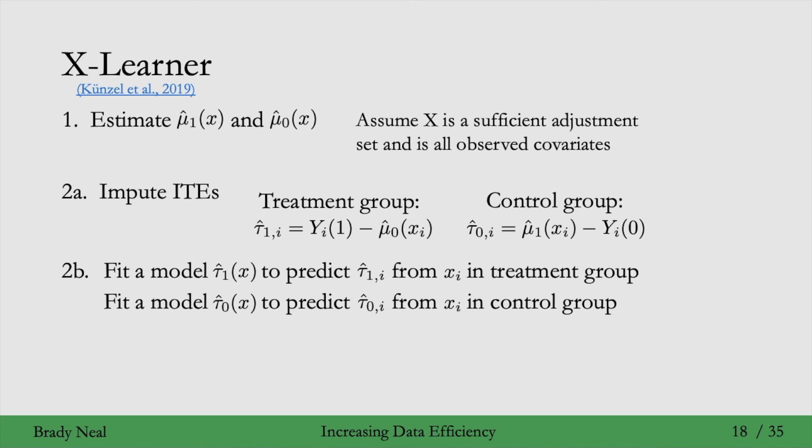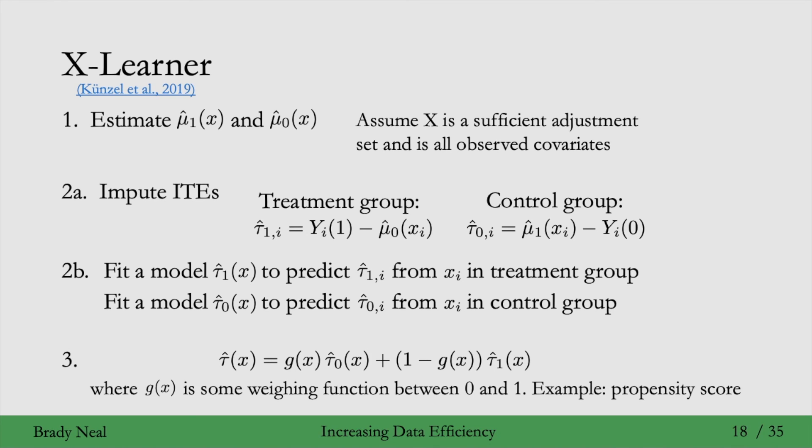In step 3, we combine these using a weighting function, G of X here, that can be anything that outputs numbers between 0 and 1. In the X-Learner paper, they say that they find that using the propensity score works fairly well, which we'll see shortly. But you don't need to be using the propensity score.